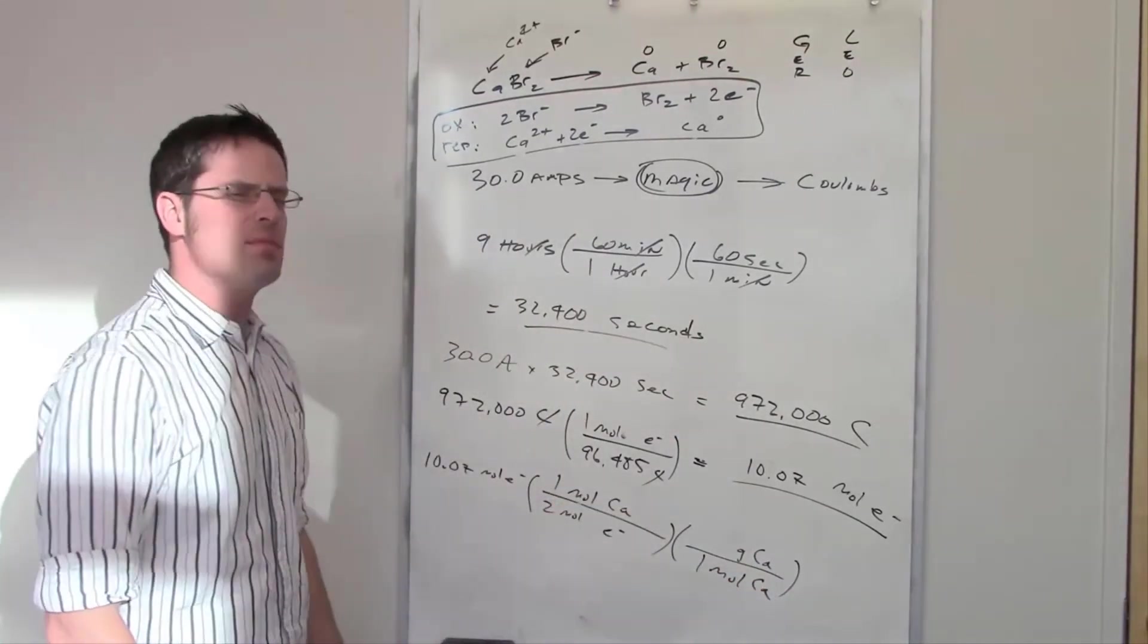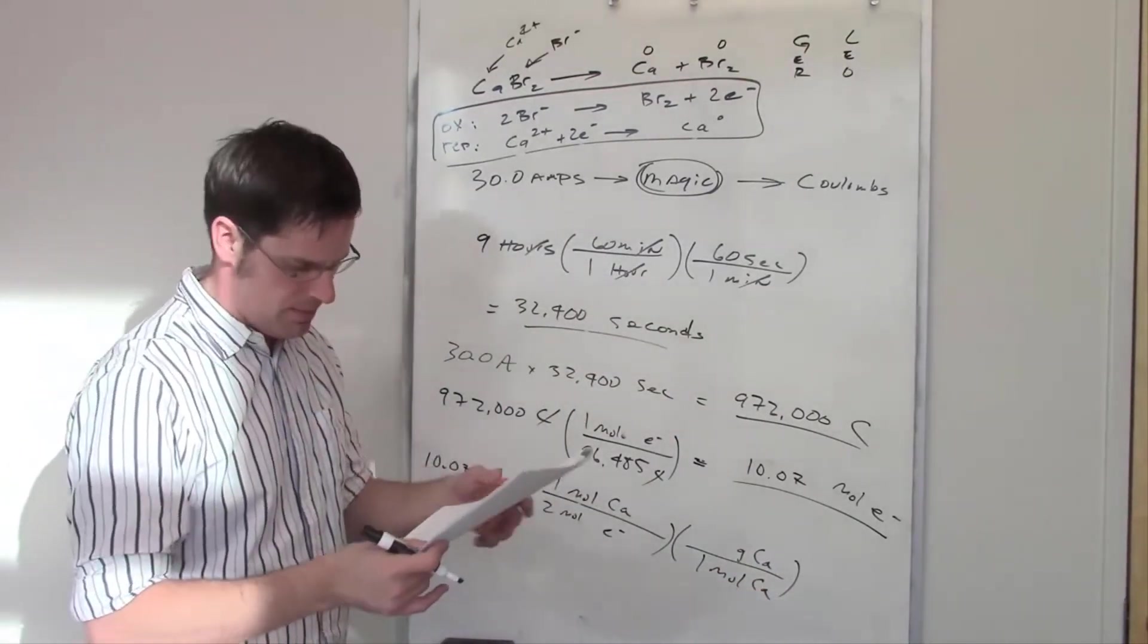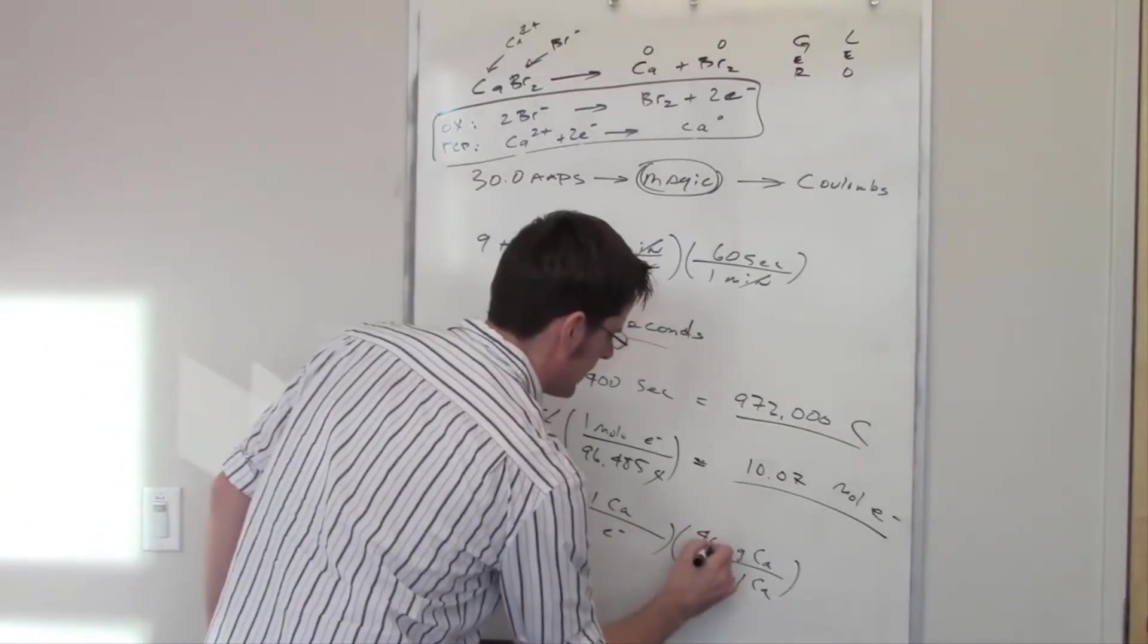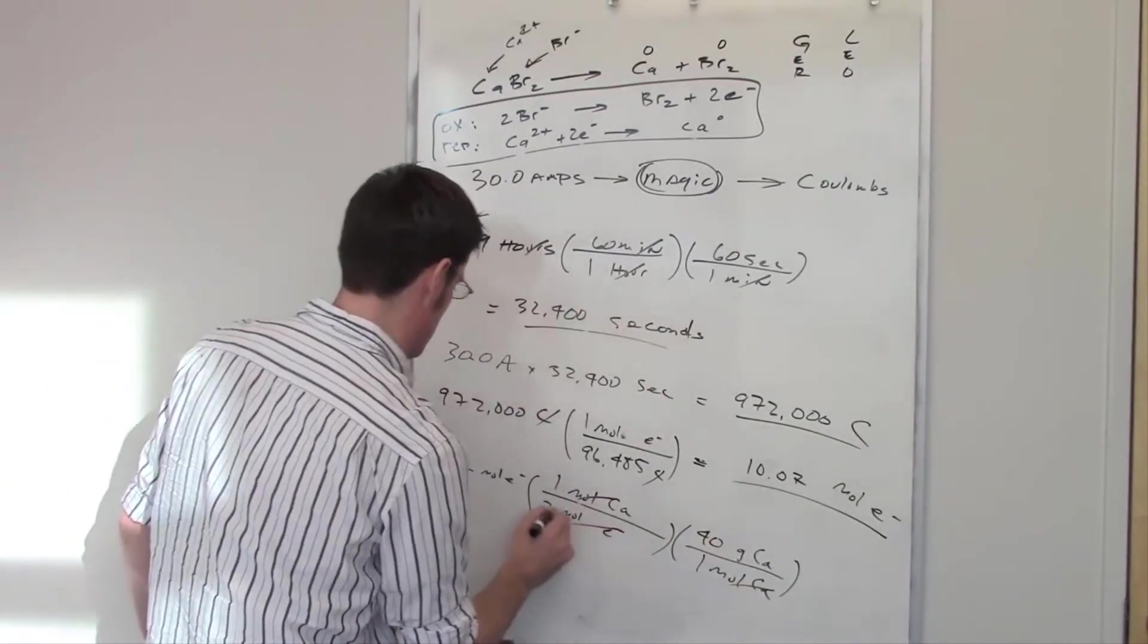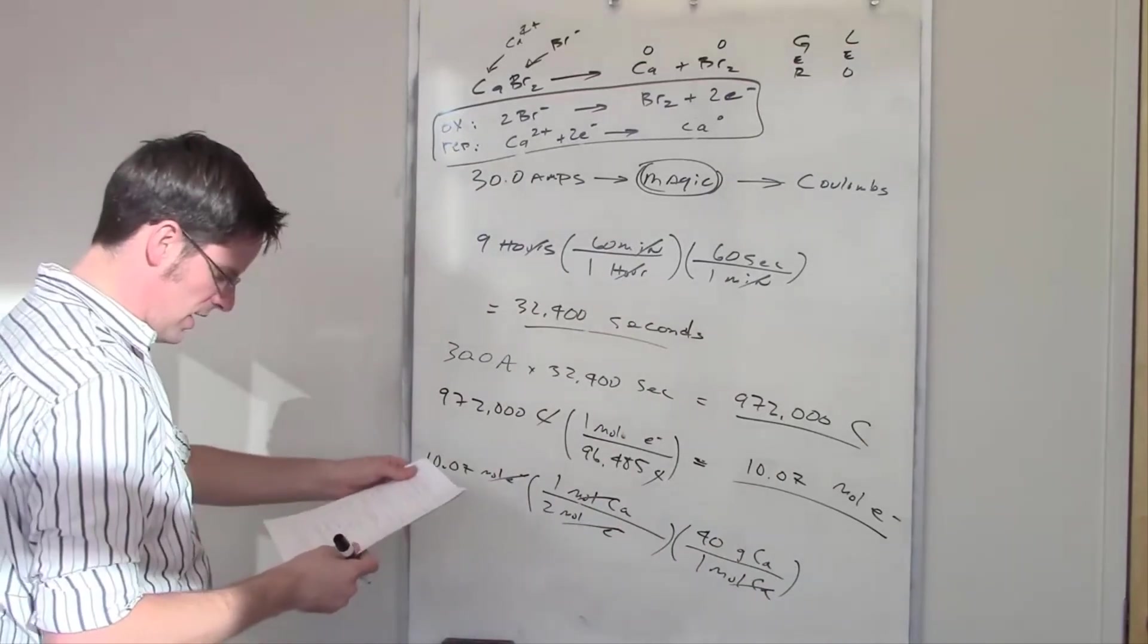As this process goes, by the way, you are producing calcium metal, and if you're doing this in a battery or a galvanic cell, you'd see calcium start to accumulate at the cathode because that's where the reduction side is. So I've got moles of electrons—I want to eventually get to grams of calcium.